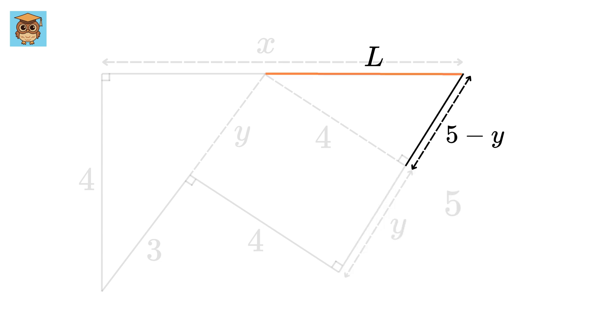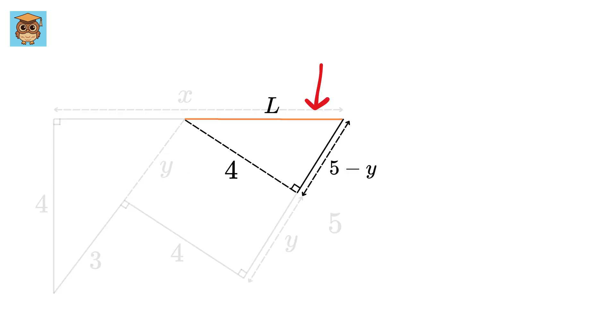Let us label this piece as L. Now since this is a right triangle, so using Pythagoras theorem, this piece, which is the hypotenuse square, or L square, will be equal to 4 square plus 5 minus Y, the whole square.